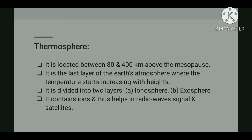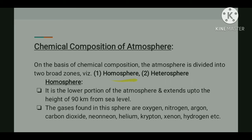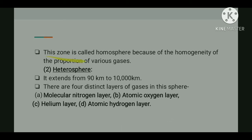The atmosphere is also divided on the basis of chemical composition into two broad zones: homosphere and heterosphere. The homosphere represents the lower portion of the atmosphere and extends up to a height of 90 kilometers from sea level. It consists of various gases like oxygen, nitrogen, argon, and carbon dioxide. It is called the homosphere because the proportion of different gases is uniform at different levels.